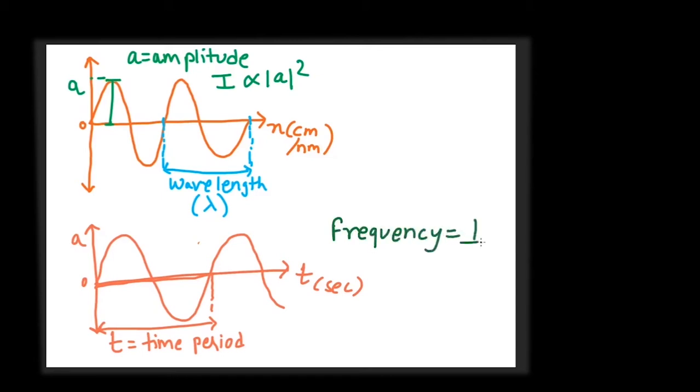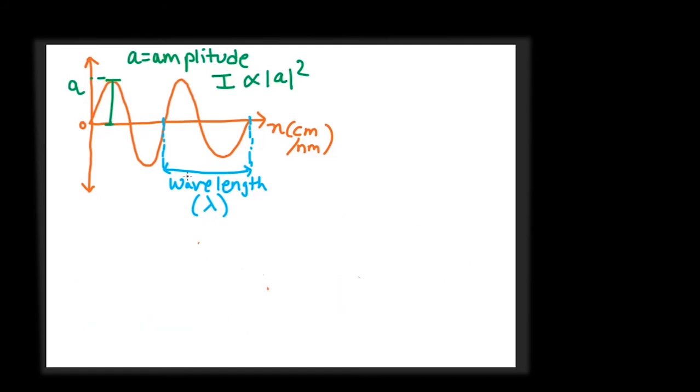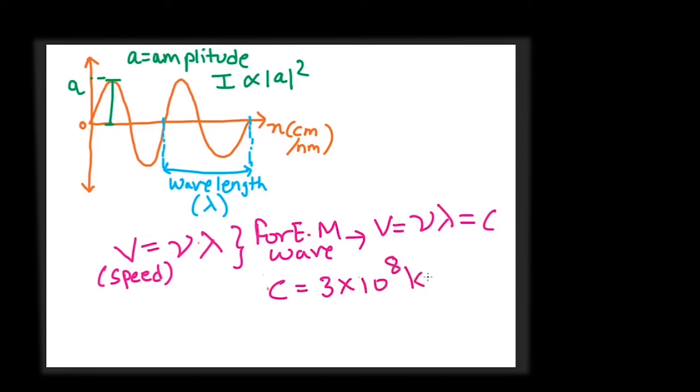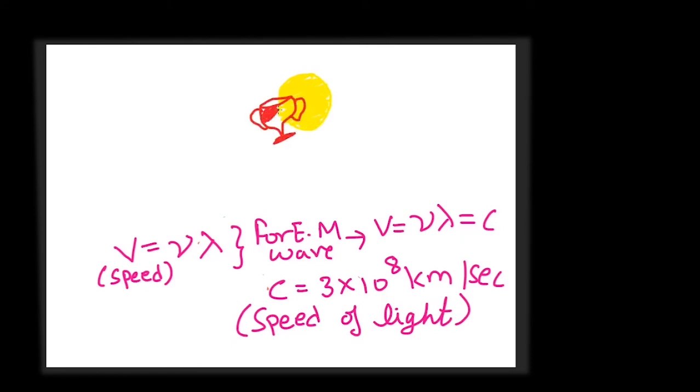The frequency of the wave is the number of full cycles—that is, a crest and a trough—that pass through a point in one second. It is the reciprocal of time period. The speed of the wave is the product of its wavelength and its frequency. For all electromagnetic radiations including light, speed in vacuum is a constant called c. The value of c is three lakh kilometers per second. Nothing can travel faster than the speed of light in a vacuum. So for an electromagnetic wave to keep the speed constant, whenever the wavelength decreases, frequency increases.